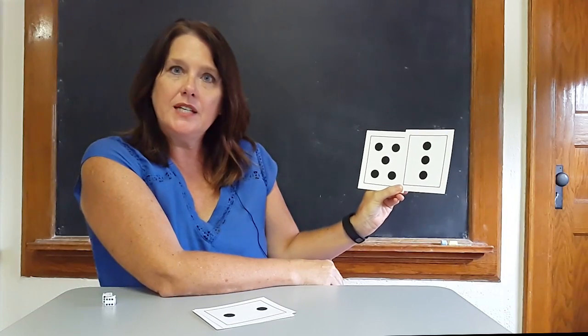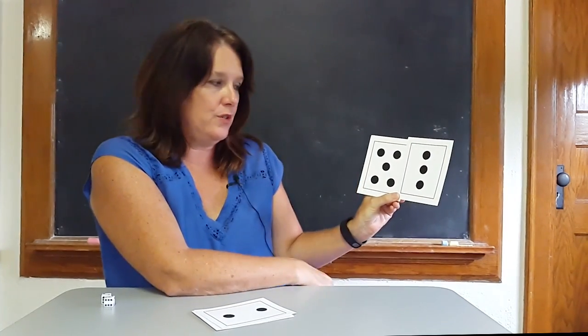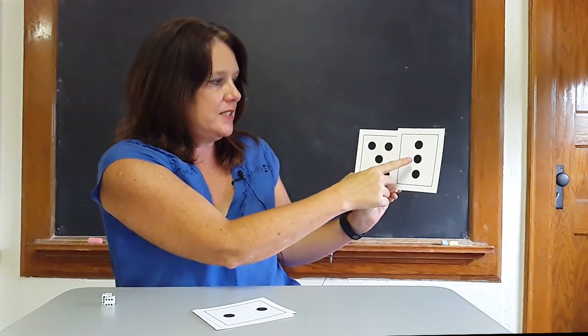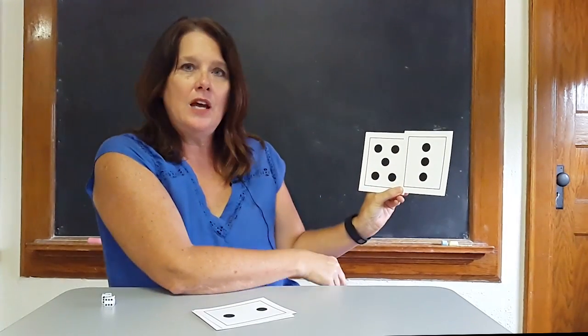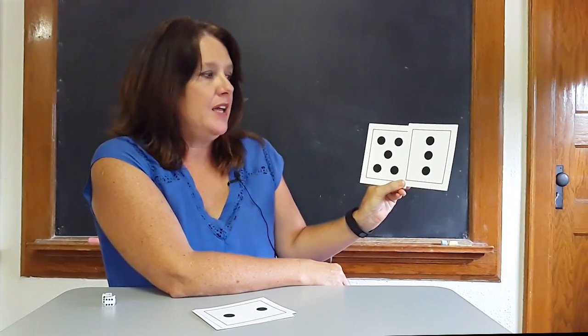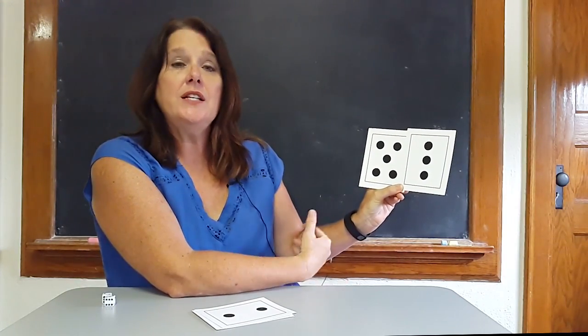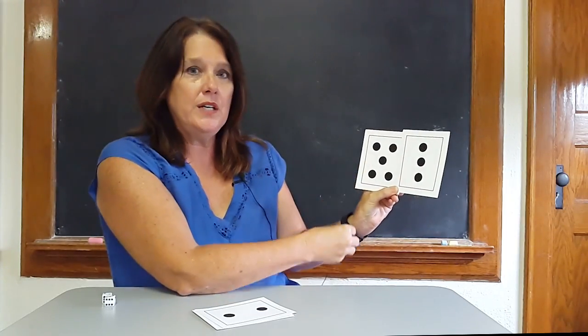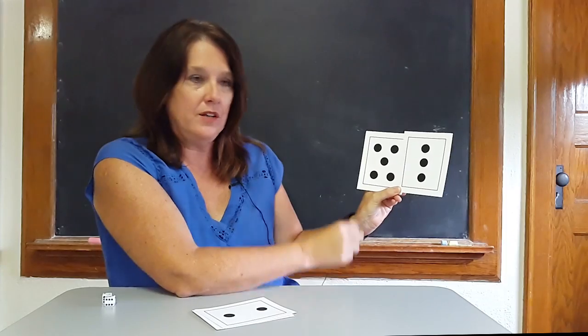And I would have the class and I would count together the dots on the two cards: one, two, three, four, five, six, seven, eight. Then I would ask them, boys and girls, how many dots are on the two cards? And they would hopefully tell me eight. If they tell me something different, then I would count the cards again until they agreed as a group there are eight dots on these two cards.